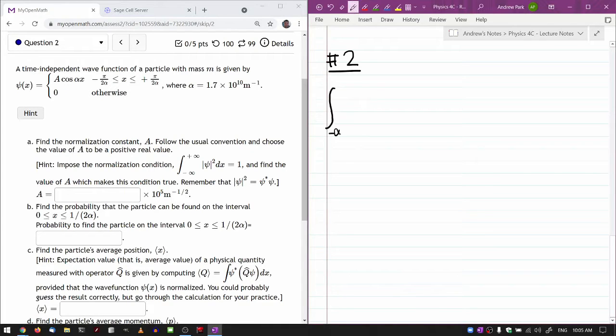So I'm setting up the normalization condition, psi absolute value squared dx. Now I note that the wave function in this time independent wave function is entirely real. So I can simplify this quite a bit. I can for one set my limit of integration from negative pi over 2 alpha to pi over 2 alpha. And just to write down the function as a squared cosine squared alpha x dx.